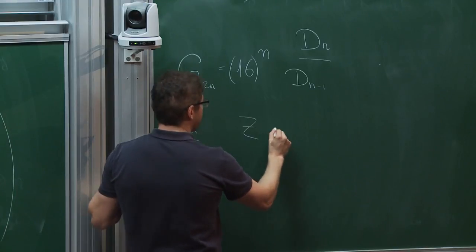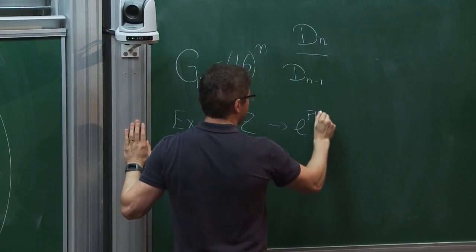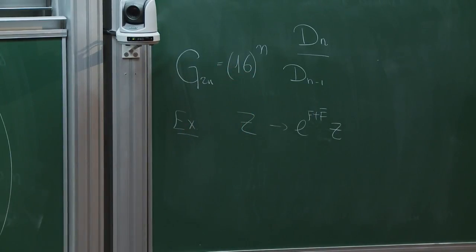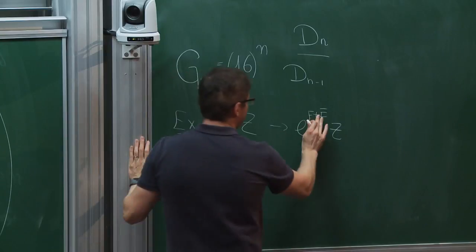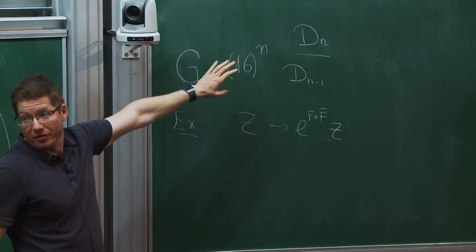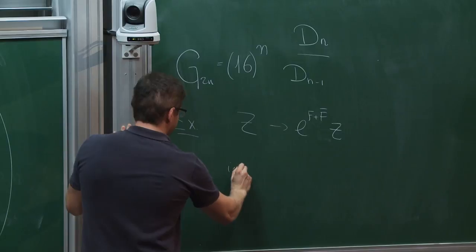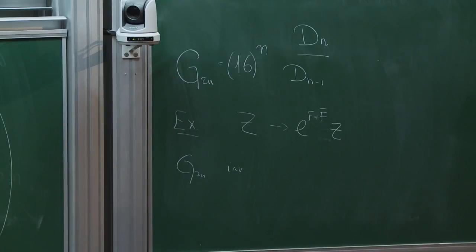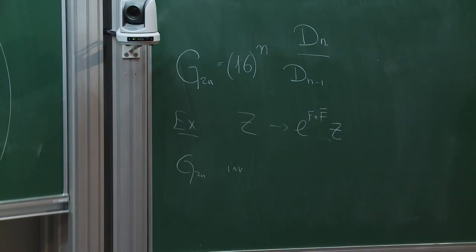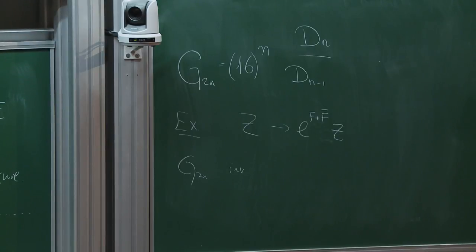As we discussed many times, the partition function is not actually an observable — you can shift it by a holomorphic plus an anti-holomorphic function. You can check that G₂N is invariant under this transformation, which is an extremely non-trivial exercise. This invariance is a very non-trivial property of this construction, and it's necessary if what you want to construct is an actual observable.